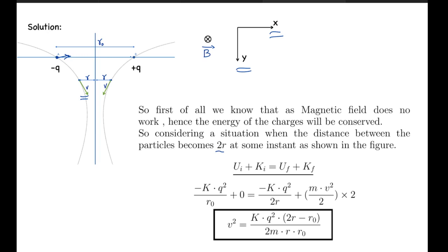So here the total energy initial equals to final total energy. From here, Ui plus Ki equals to Uf plus Kf. So from here, Ui should be minus K q squared by r naught plus initial kinetic energy which is zero, which equals to minus K q squared over 2r plus m v squared by 2 times 2. From here the velocity we get as a function of r is v squared equals to K q squared times (2r minus r naught) over 2m times r times r naught.